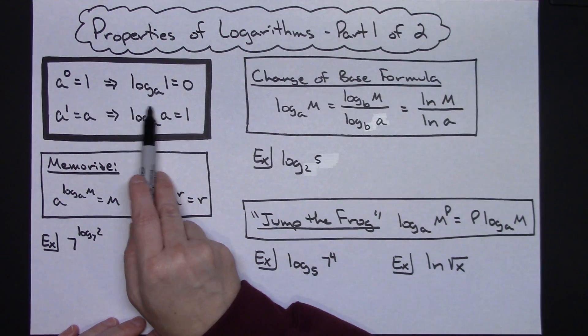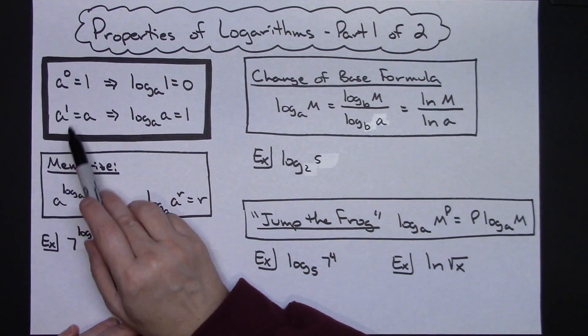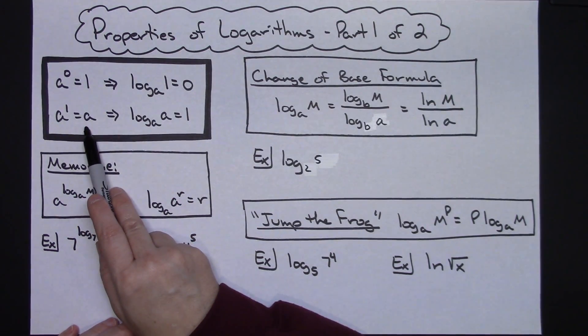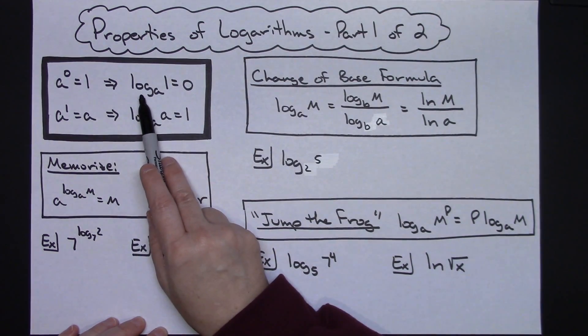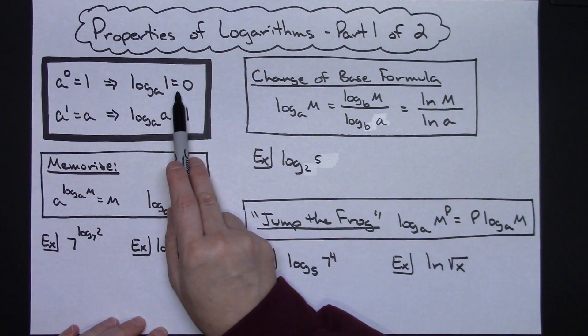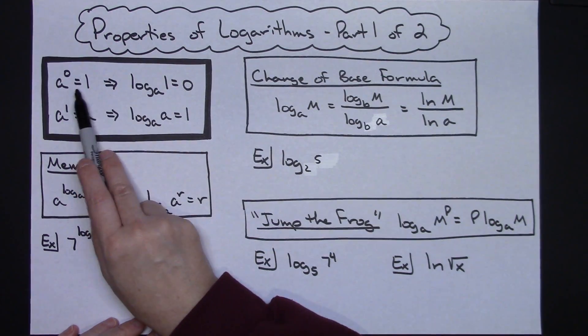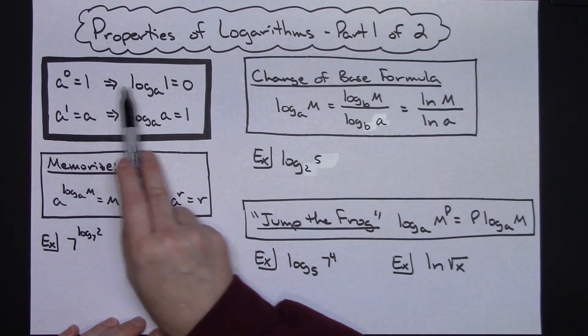Logarithms and exponent rules go hand-in-hand. So because we have these laws of exponents, then we know that the log of one to any base has to equal zero. And that's strictly because we can convert from exponential form to logarithmic form and back and forth.